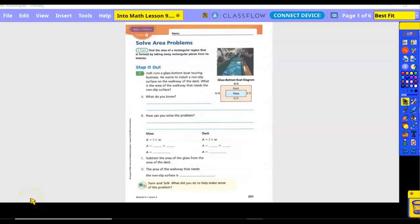Forcing into math lesson 9.4, solve area problems. I can find the area of a rectangular region that is formed by taking away rectangular pieces from its interior. Josh reads a glass bottom boat terrain distance. He wants to install a non-slip surface on the walkway of the jet. What is the area of the walkway that needs the non-slip surface?